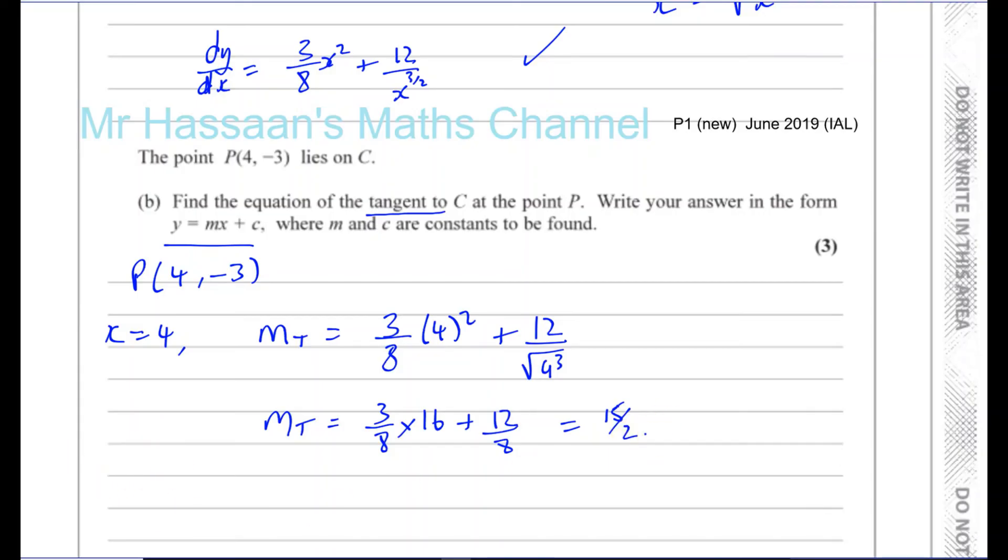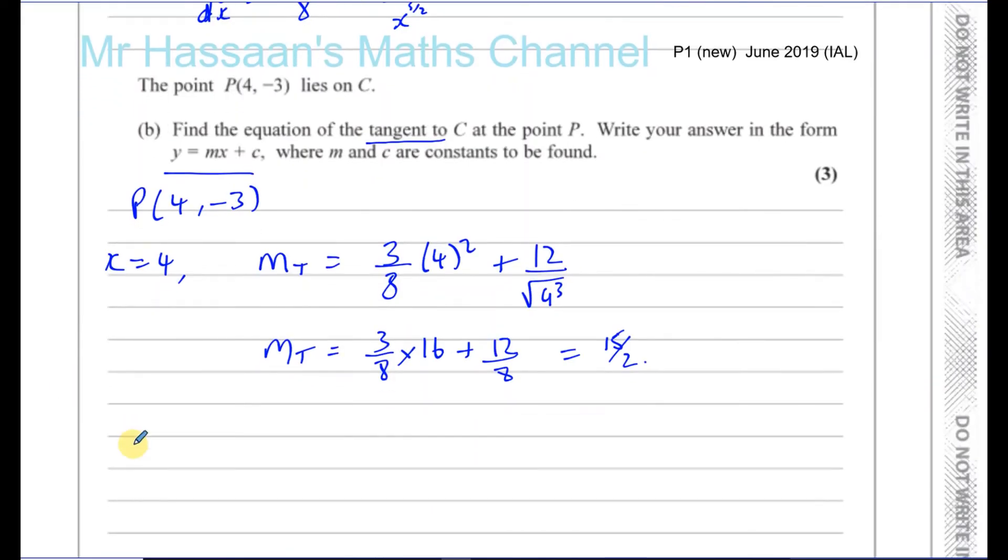So now we have a point on the tangent, and we have the gradient of the tangent. So P, 4,-3, and the gradient of the tangent is equal to 15/2. So we can say that the equation of the tangent is y minus y₁ equals m times x minus x₁. So you have y minus minus 3 equals m, which is 15/2, times x minus 4.